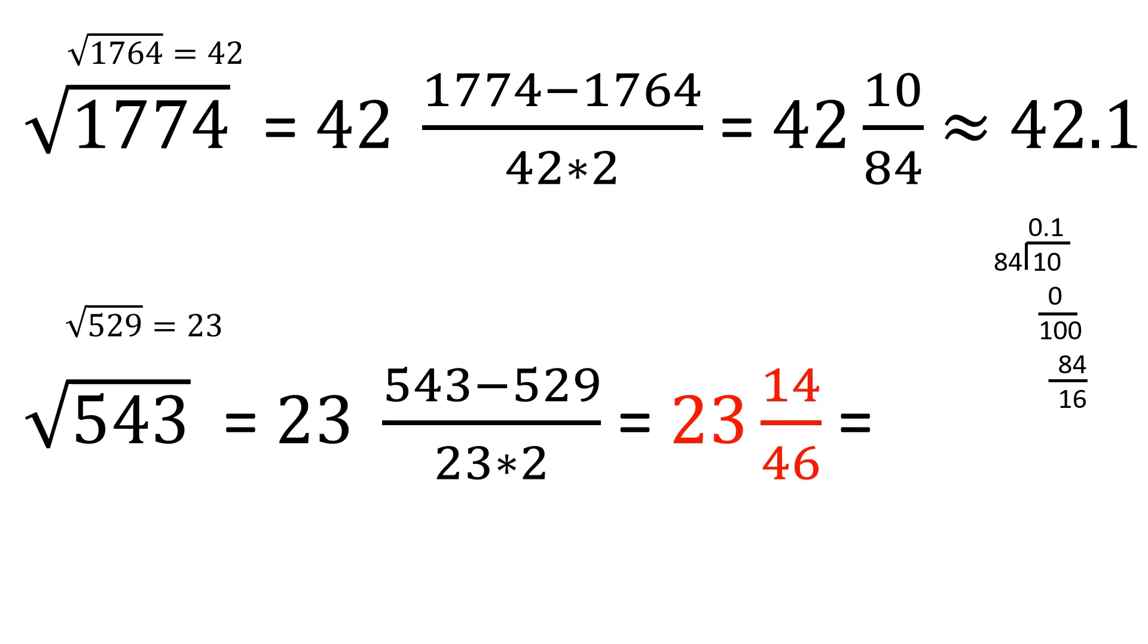We'll get 23 and 14/46. Let's simplify. We get 23 and 7/23. Using long division, we can divide 7 by 23 to determine the decimals. Our solution is 23.3.